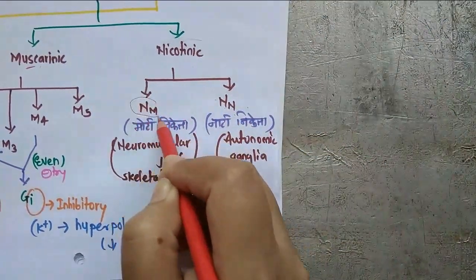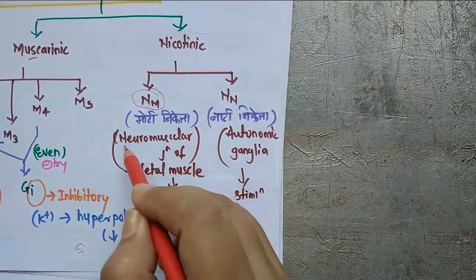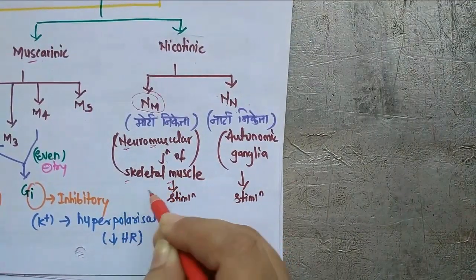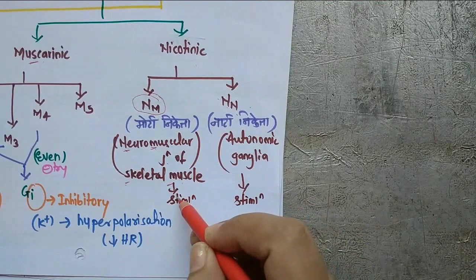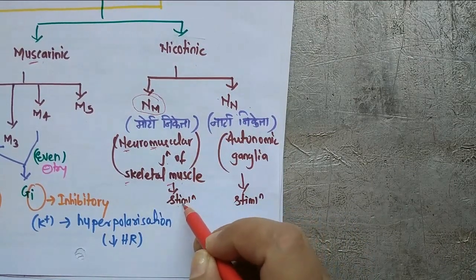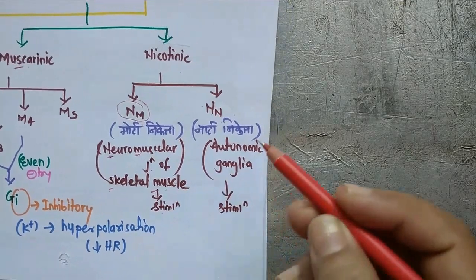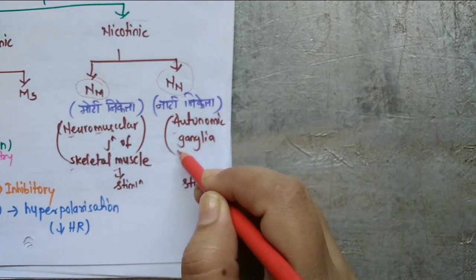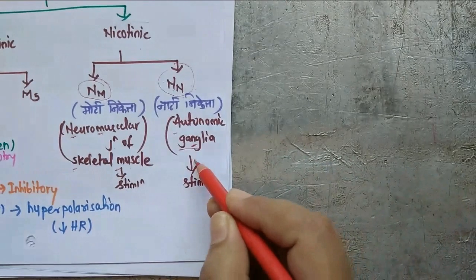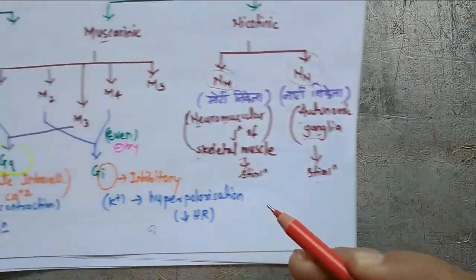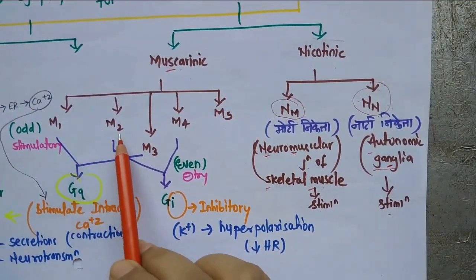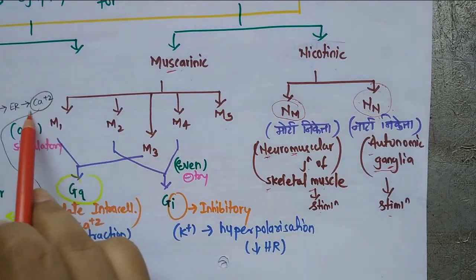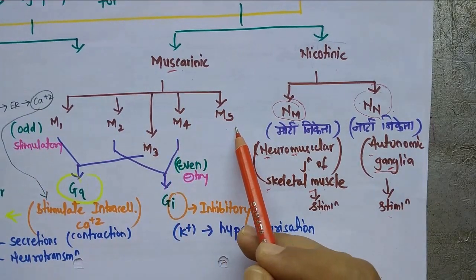NM receptors act at the neuromuscular junction of skeletal muscles and are responsible for stimulation and contraction of skeletal muscles. NN receptors act on autonomic ganglia and are responsible for ganglionic stimulation. For muscarinic receptors, we will focus on M1, M2, and M3 only, because they have more marked pharmacological actions compared to M4 and M5.